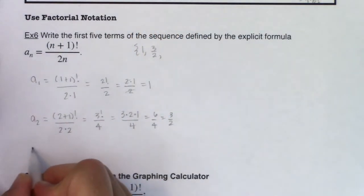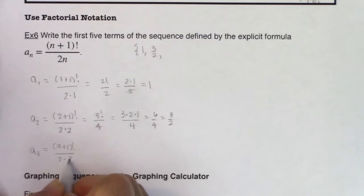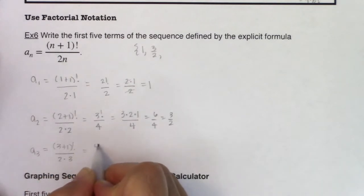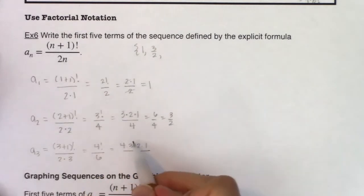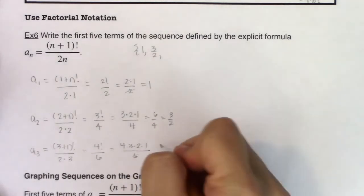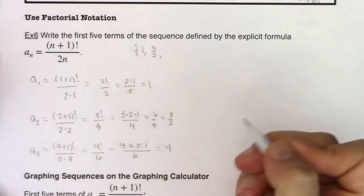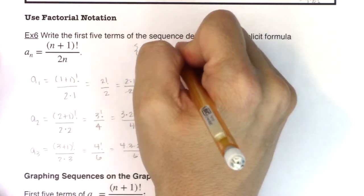Let's do a sub 3. a sub 3 is going to be (3+1)! over 2 times 3. That's going to be 4! over 6. So that's going to be 4 times 3 times 2 times 1 over 6. I can see that the 3 and the 2 and the 6 cancel out. So that's just going to leave me with 4.